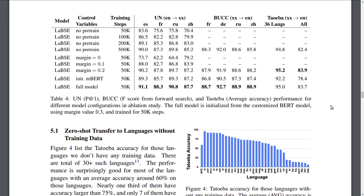Additionally, this model uses a huge vocabulary of 500,000 tokens, which is very large and may also be contributing to the model's success across so many languages.